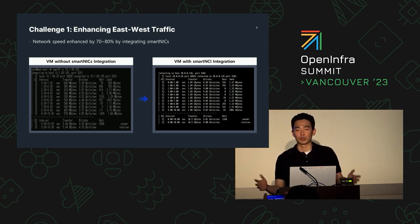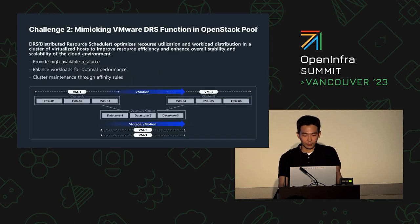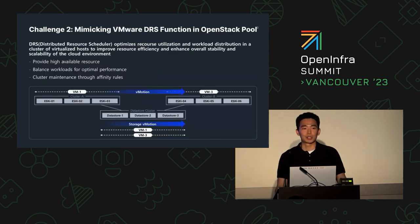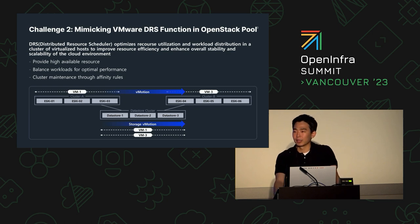The data we collected comparing an environment without SmartNICs versus one with SmartNICs implemented shows that network traffic optimization and capability increased by about 70%. With that, I'll wrap up the first challenge and move on to the second: mimicking VMware's DRS function in the OpenStack pool.